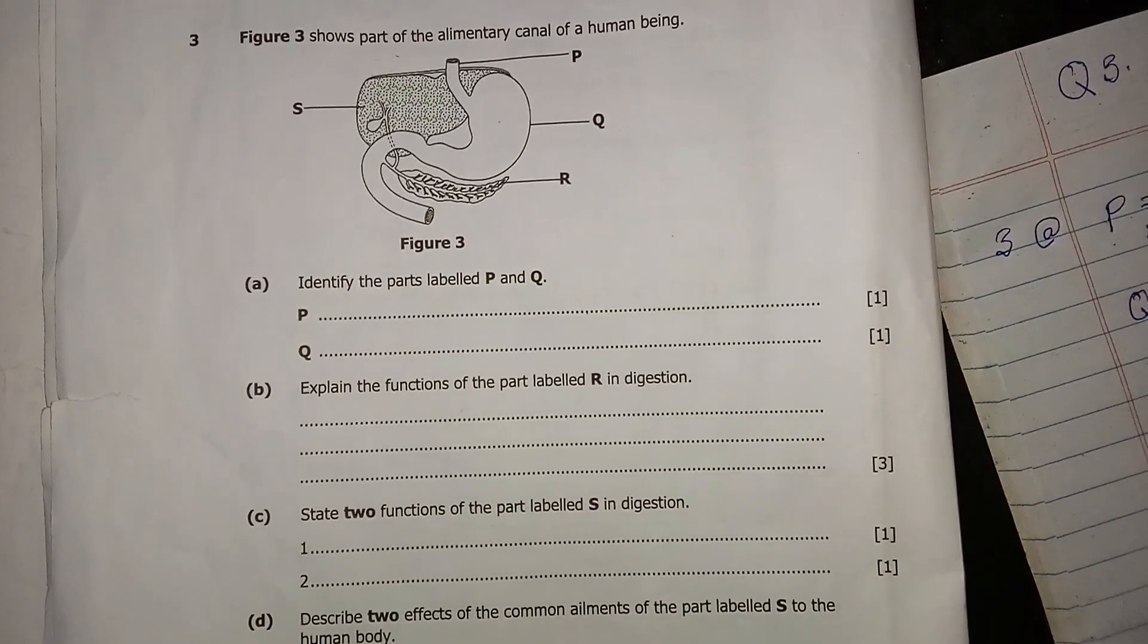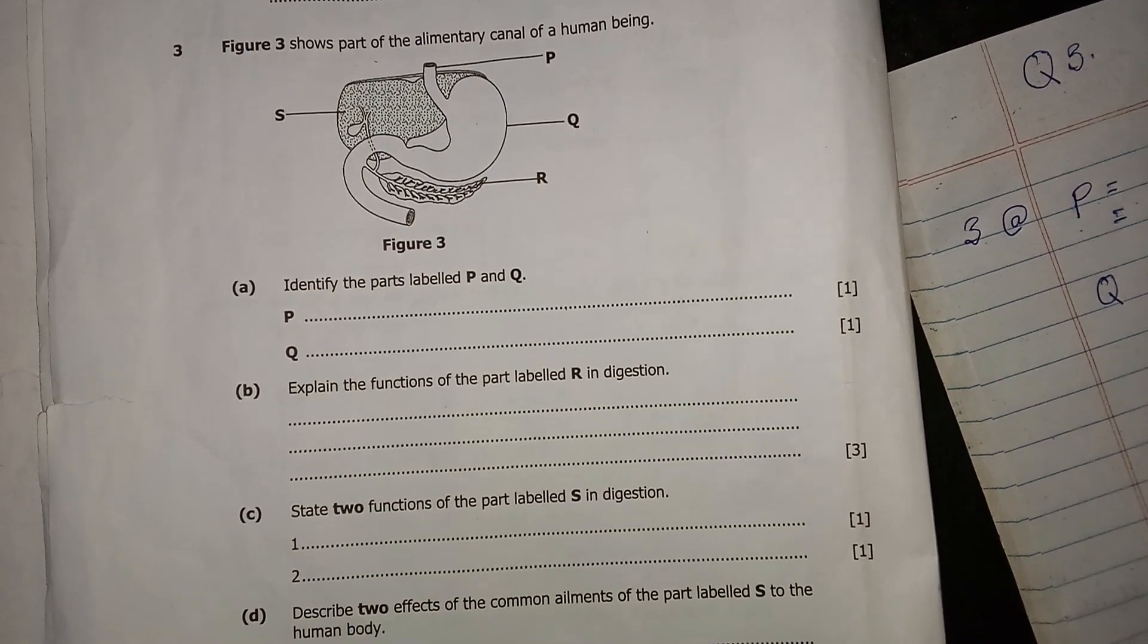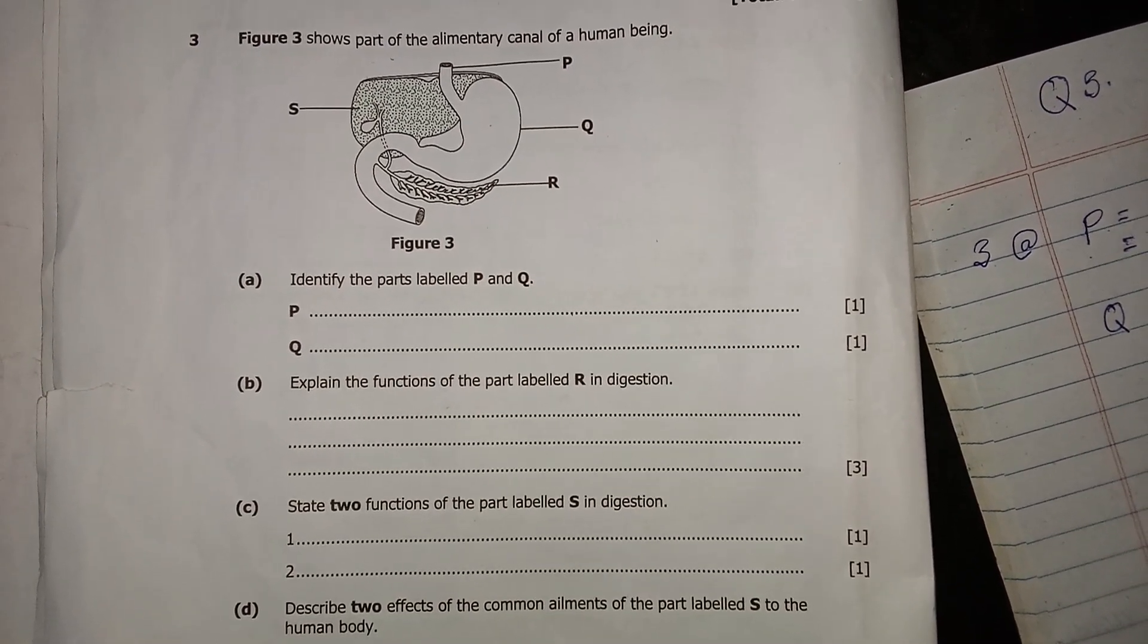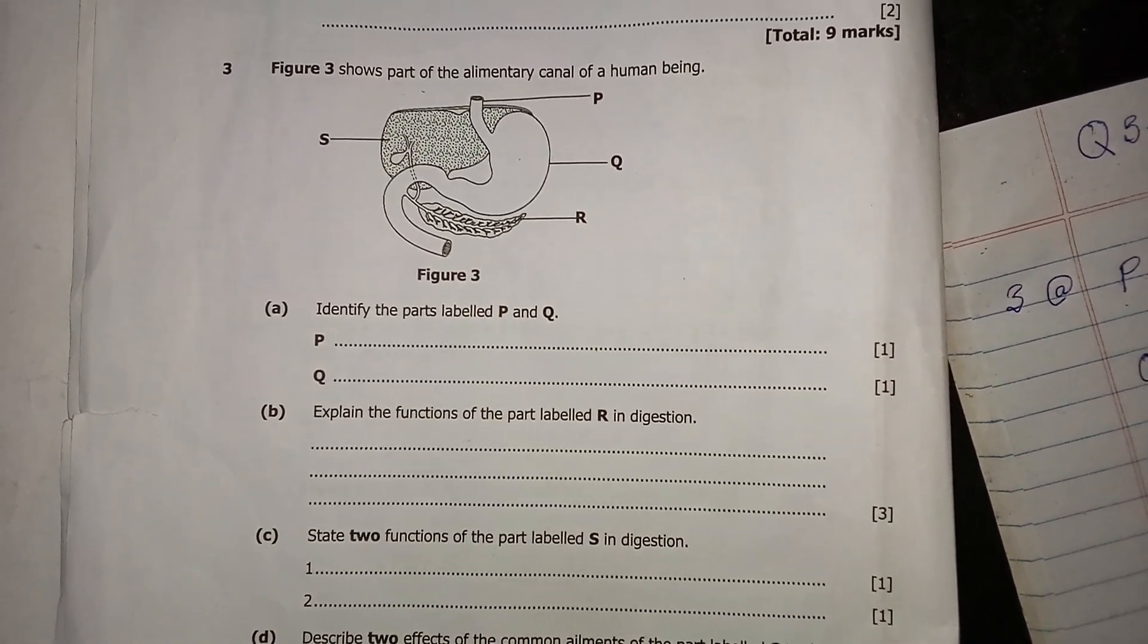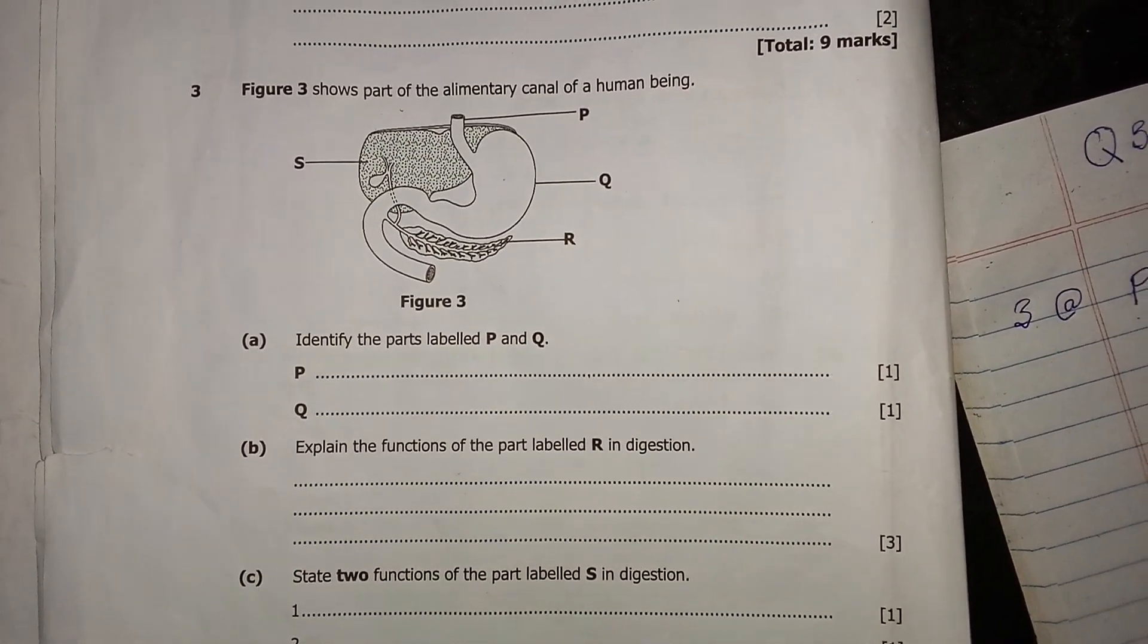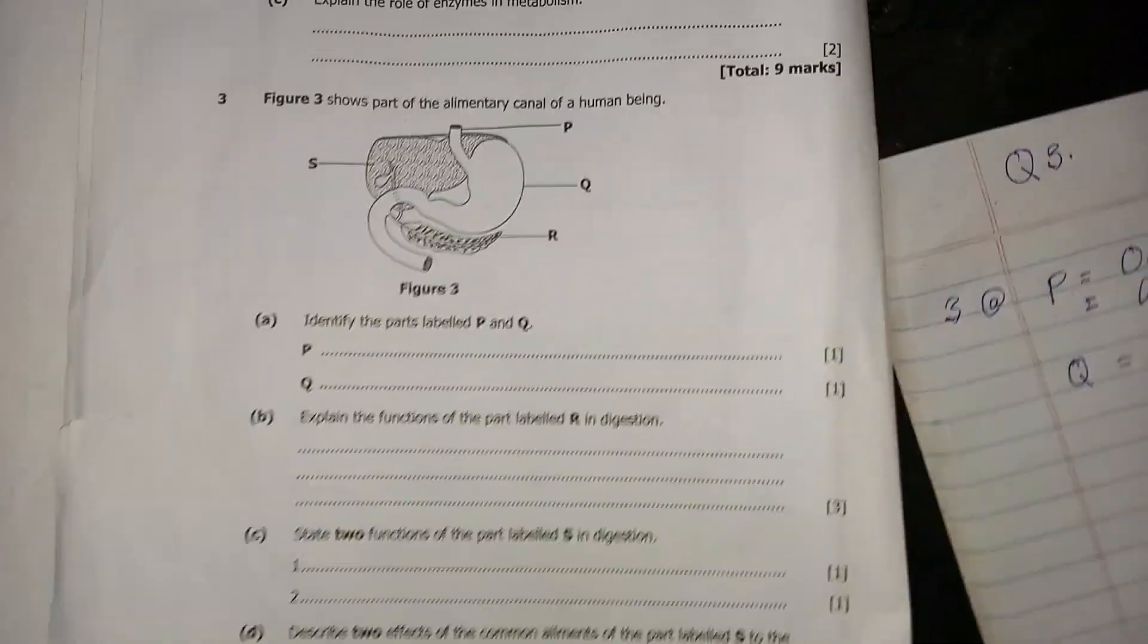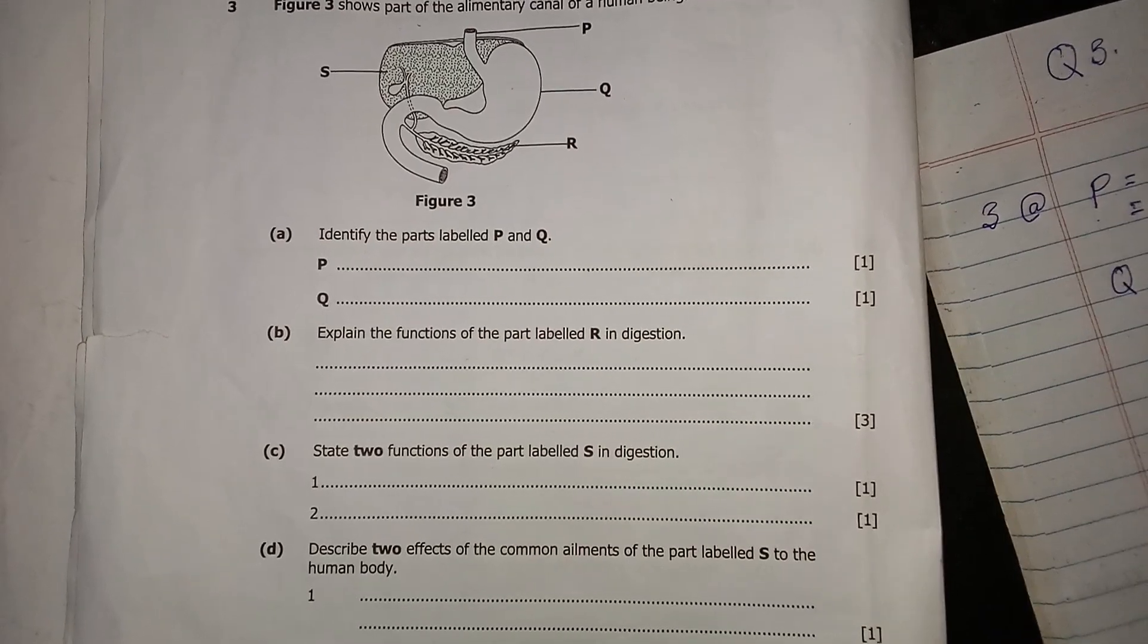B is saying, explain the function of the part labeled R in digestion. First of all, you need to identify what part R is. So part R is a pancreas. A pancreas plays various roles in digestion.